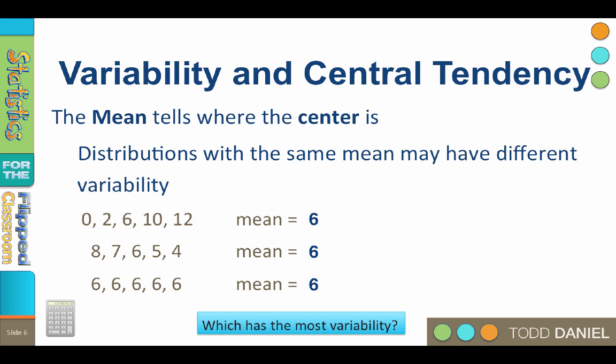The mean is a perfect predictor. If I choose an X score at random and ask you to predict what it will be, you will get it exactly right every time. The measurement error in the first data set is much higher. Using the mean to predict a highly variable data set is much less useful because the score is less representative. But with low variability, we have high predictability.